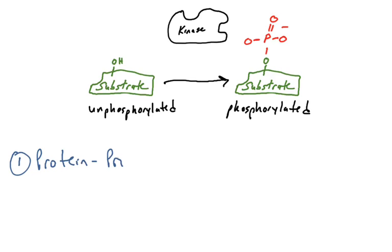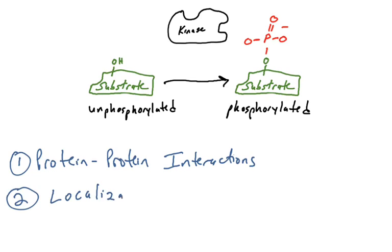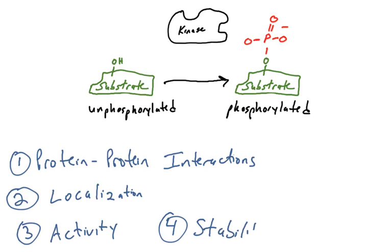There are really four things that phosphorylation can affect in proteins in the cell. First, protein-protein interactions — phosphorylating a protein can cause a change in protein-protein interactions. Second, localization — putting a phosphate group on a protein can change where that protein is in the cell. Third, phosphorylation can regulate the activity of a protein; if a protein is an enzyme, phosphorylating it could change its activity. Fourth, phosphorylation can control the stability of a protein.